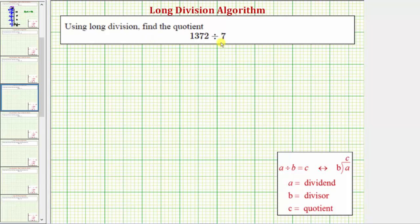We want to use long division to find the quotient. We have a four-digit number divided by a one-digit number. In this example, we'll be using the traditional long division algorithm. The first step is to write this quotient in long division form. These two division problems are equivalent, where A is the dividend, B is the divisor, and C is the quotient. So we'll write 1,372 divided by seven in this form here.